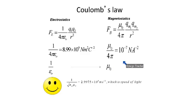One more interesting thing is that the value of 1/√(ε₀μ₀) is approximately 3×10⁸ m/s, which is the speed of light. That means the above equations relate electricity, magnetism, and optics, which was unified by James Clerk Maxwell.